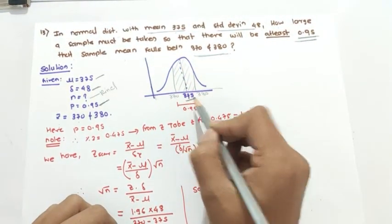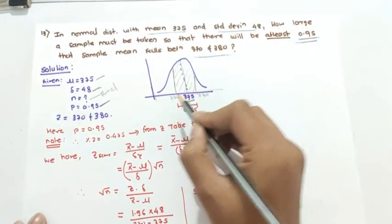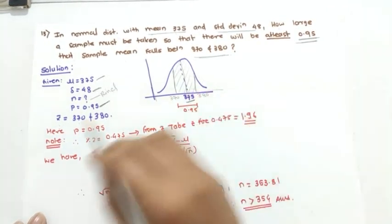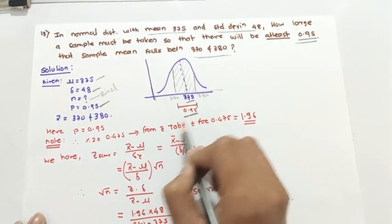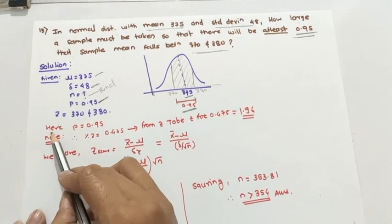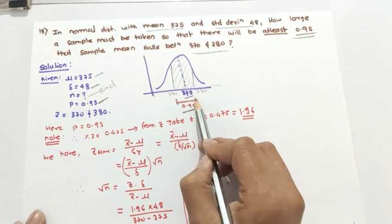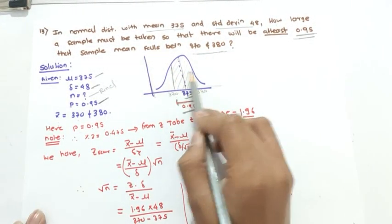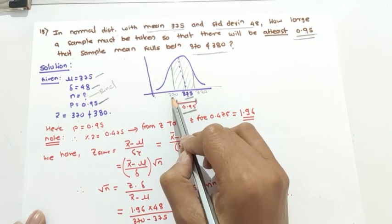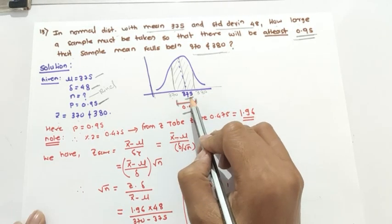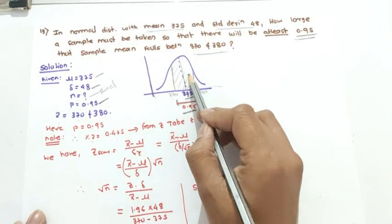Drawing the normal distribution: the center line is the mean 375. The range is 370 to 380 — both values are 5 away from the mean. The total probability for the region 370 to 380 is 0.95. Since the distribution is symmetrical, we divide by 2 to get 0.475 for each side.